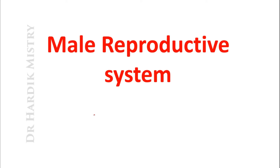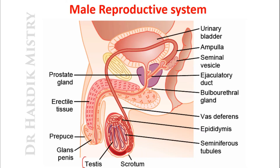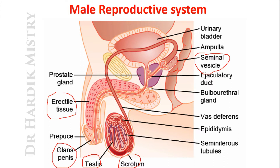In this video we are going through the male reproductive system. Here is the testis, which is present inside the scrotum. This is the penis; the penis contains erectile tissues. The top portion of the penis is known as the glans penis. Other structures include the seminal vesicle, the prostate gland, the ejaculatory duct (shown in violet), and the bulbourethral gland. The vessel you are seeing is known as the vas deferens.